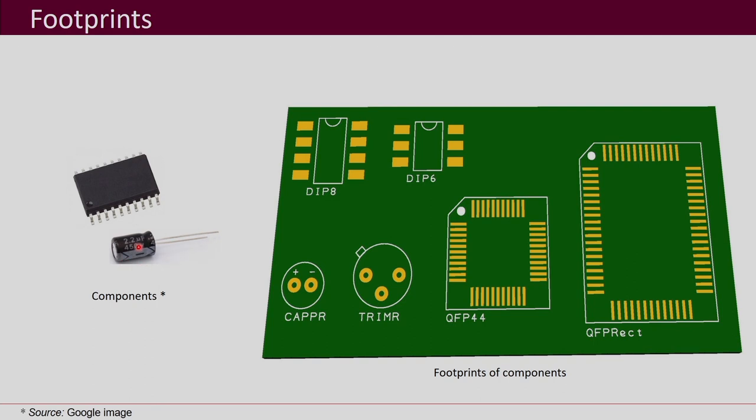For a through-hole component, the footprint will have holes in it and then copper across it. This is the footprint of a through-hole component like a capacitor, and these are also footprints of some SMD components. When you choose or make the footprint, you have to be very careful about the dimensions of the device or component. PCB designing software usually has extensive libraries where you will get the footprints of many components.